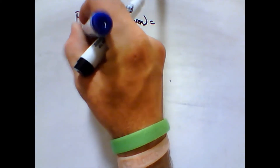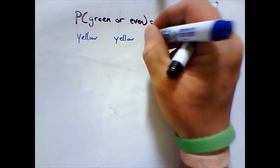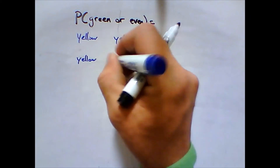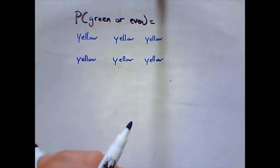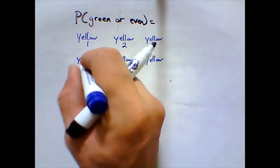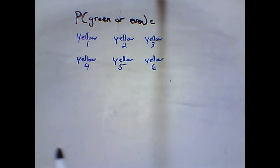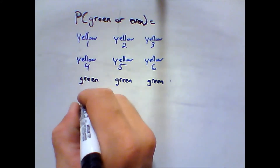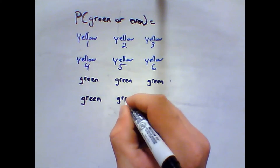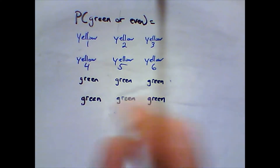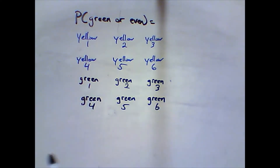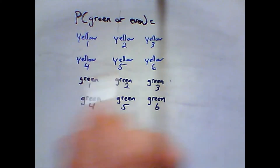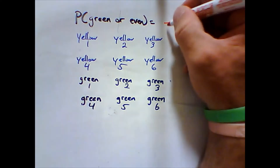Let's look at it using the picture method first. There are six yellow tickets numbered one to six: one, two, three, four, five, six. There are six green tickets numbered one to six. We're randomly picking one ticket. How many different tickets could we pick? One, two, three, four, five, six, seven, eight, nine, ten, eleven, twelve — so it's going to be something over twelve.